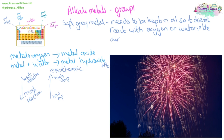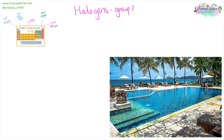Alkali metals want to lose an electron, and the ones at the bottom are most reactive because there is more shielding between the electron they want to lose and the positive nucleus in the middle. Moving over one group to group seven, we have the halogens.